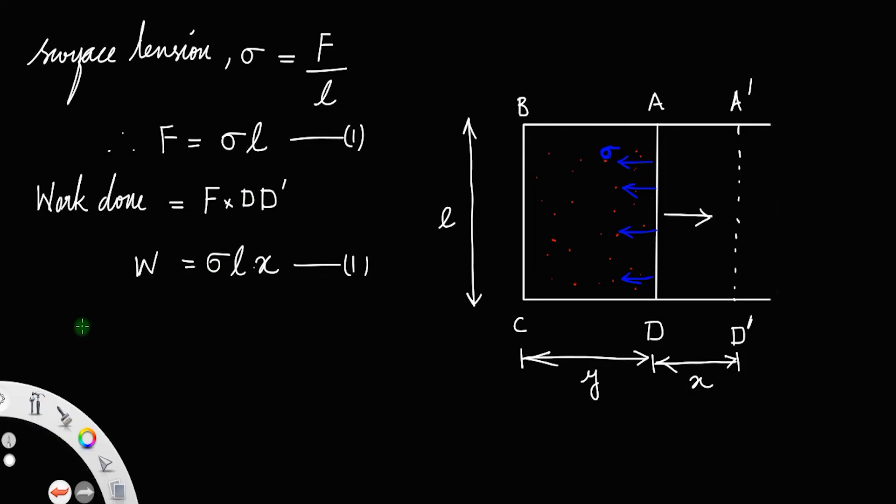From the definition of surface energy, we have surface energy is equal to work done W divided by increase in area. So surface energy equals W divided by increase in area, which is sigma L x divided by increase in area. This is the increase in area.